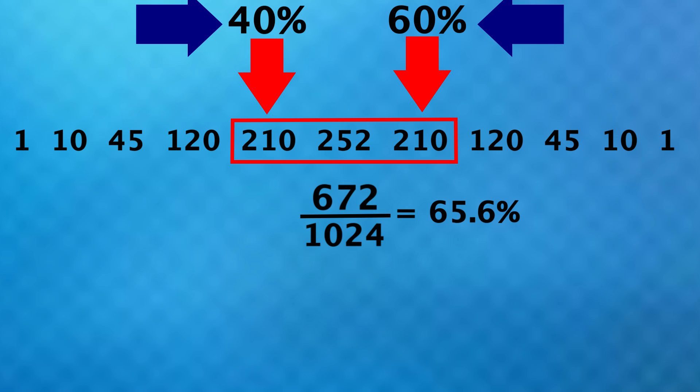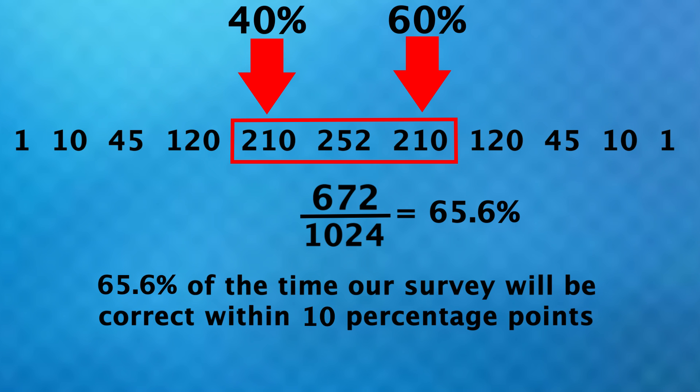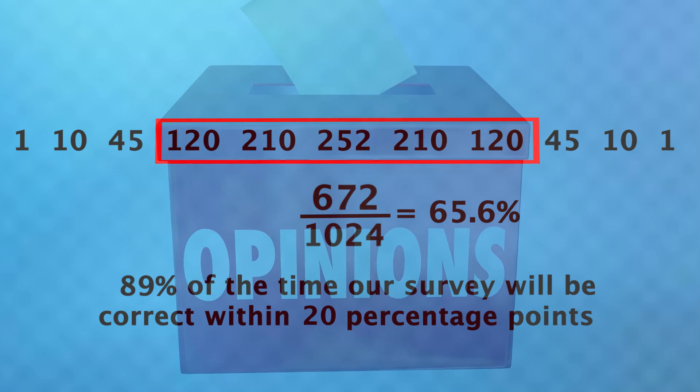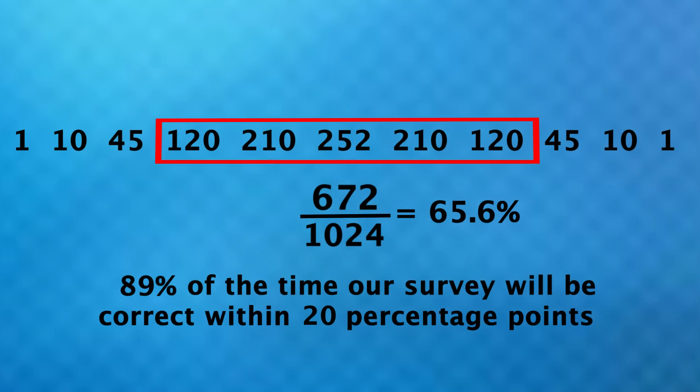Now, out of the 1024 possible outcomes, this interval accounts for 65.6% of those. And since these values are 10 percentage points off from our 50-50 expected outcome, we can now say that 65.6% of the time, our survey will be correct within 10 percentage points. We could also expand the interval and now say 89% of the time, our error will be within 20 percentage points. How confident we are about being within a certain range is what we need to really account for here. And the more people we survey, the better results we get. Like in this case, if we surveyed 100 people instead of 10, we'd be within 10 percentage points 95% of the time.